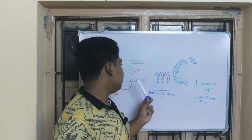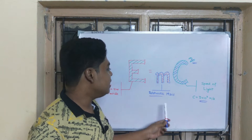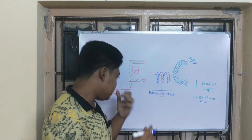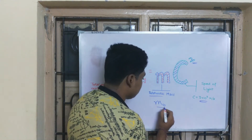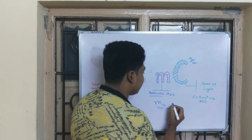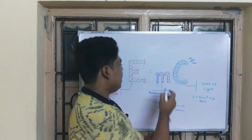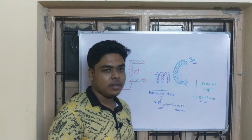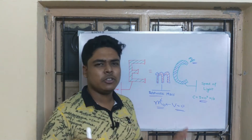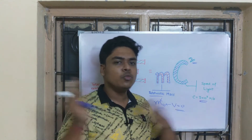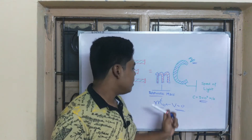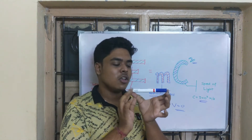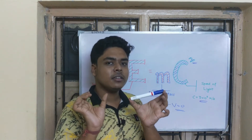So the relativistic mass M can be written as M0 when v = 0. M0 is the rest mass — the mass of the particle when it is not moving. For example, M0 = 0.01 kg.